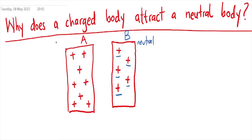This is charged. So the question is: why does a charged body attract a neutral body? We have this law of electrostatics — like charges will repel and unlike charges will attract. So because like charges repel and unlike charges attract, when we bring this charged body closer to body B, what is going to happen?